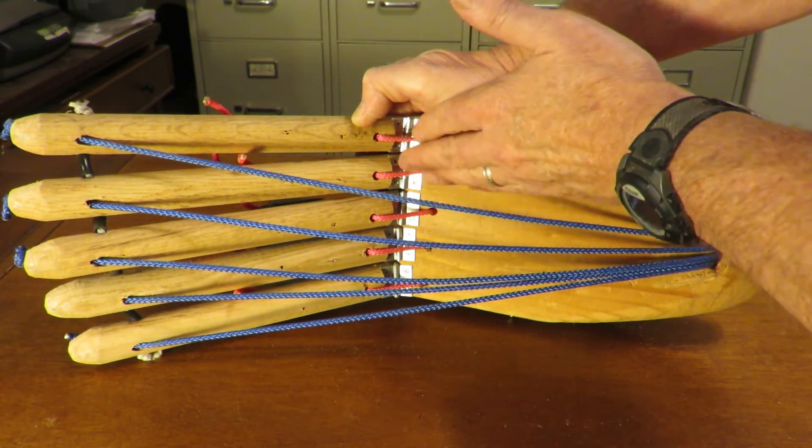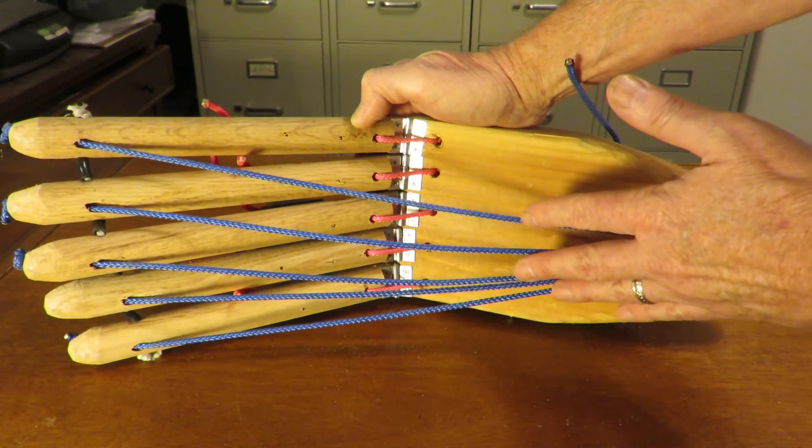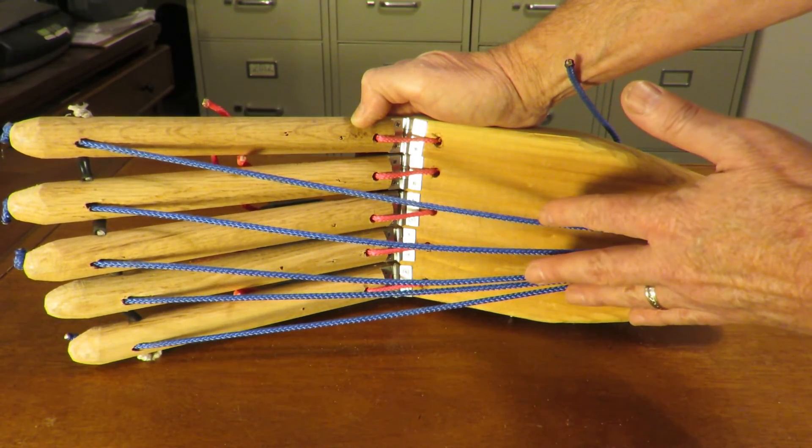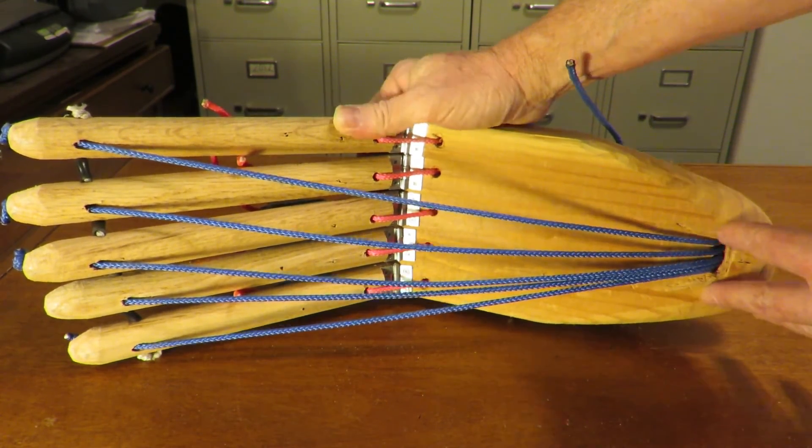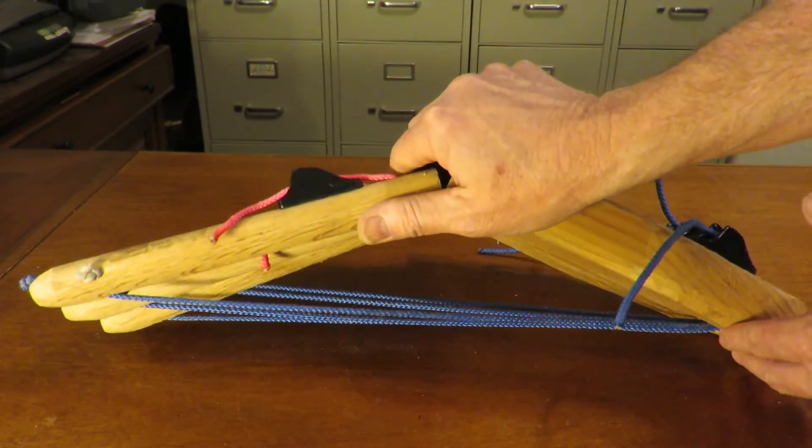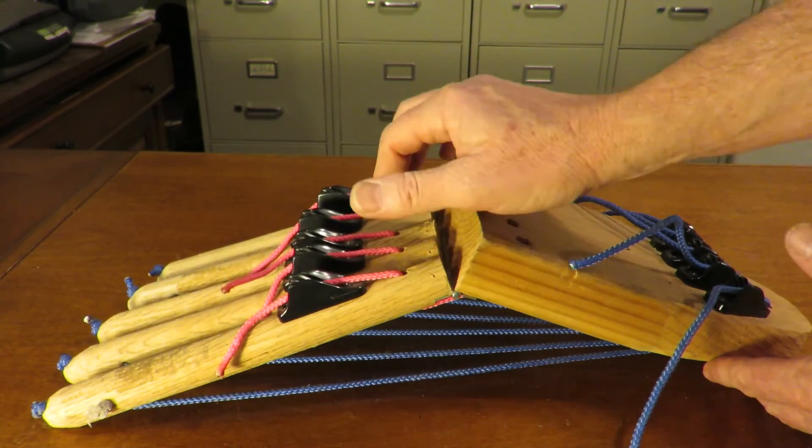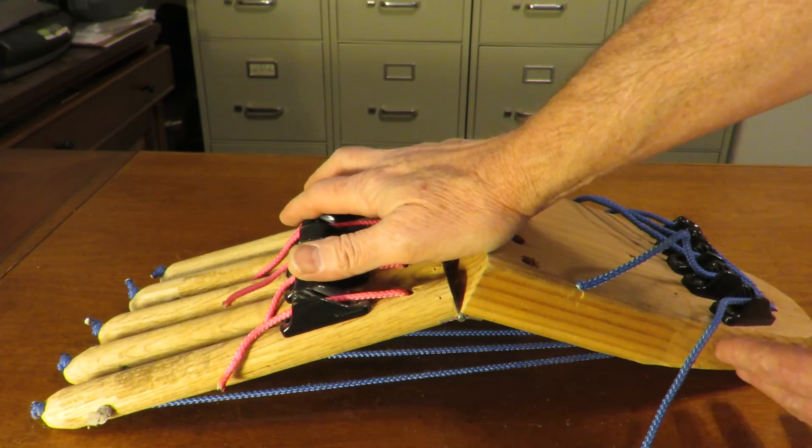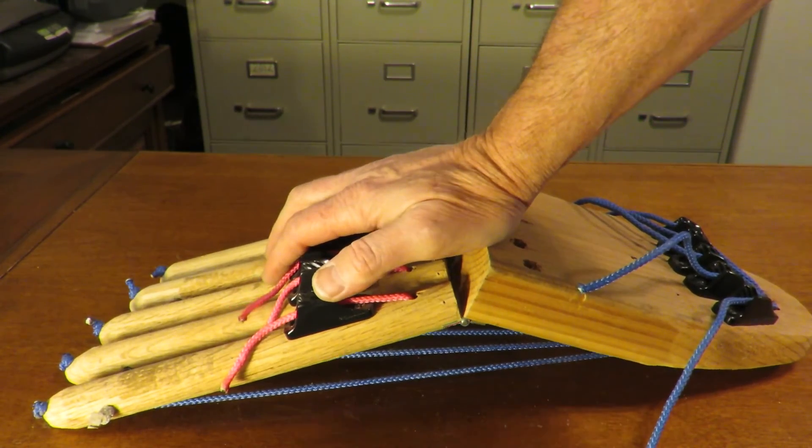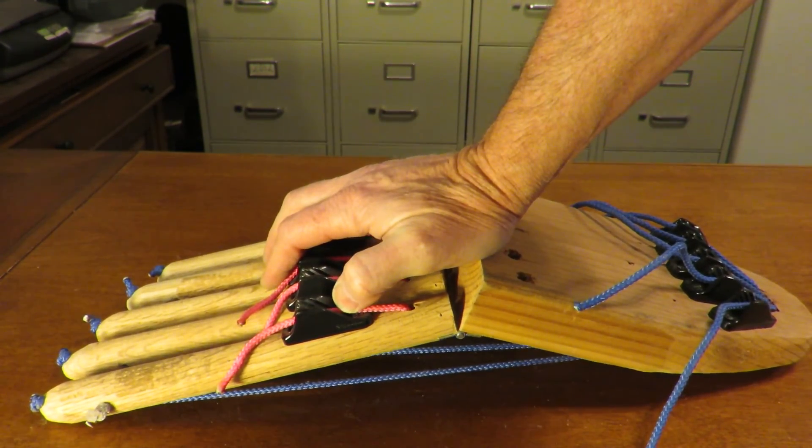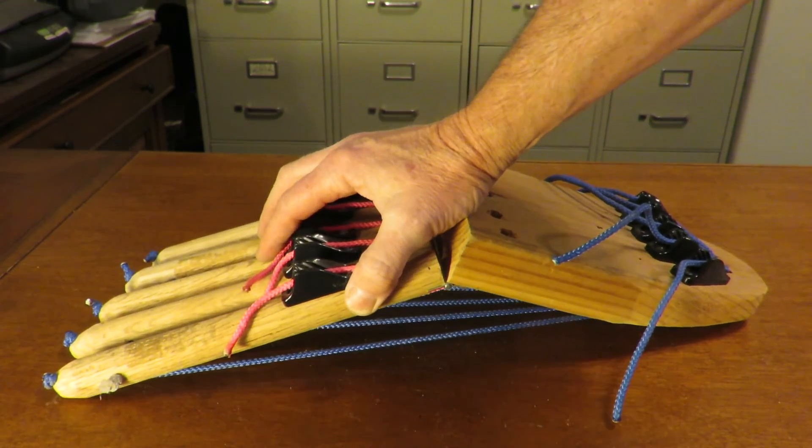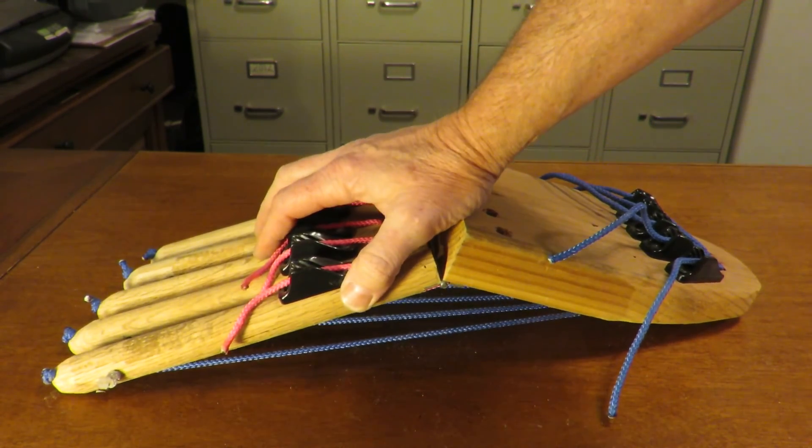And if something happens to the plantar ligaments, the plantar fascia is going to come under greater load in order to maintain the arch. So it's these two systems in combination with the plantar intrinsics, the deep flexors, and the peroneus longus, which help provide arch stability for the human foot in each step.